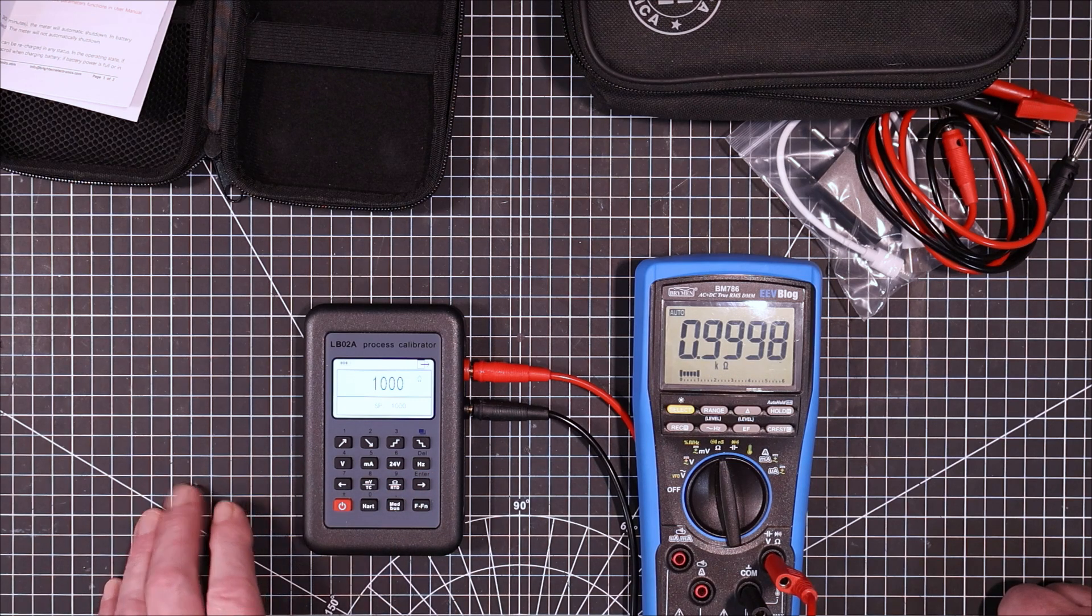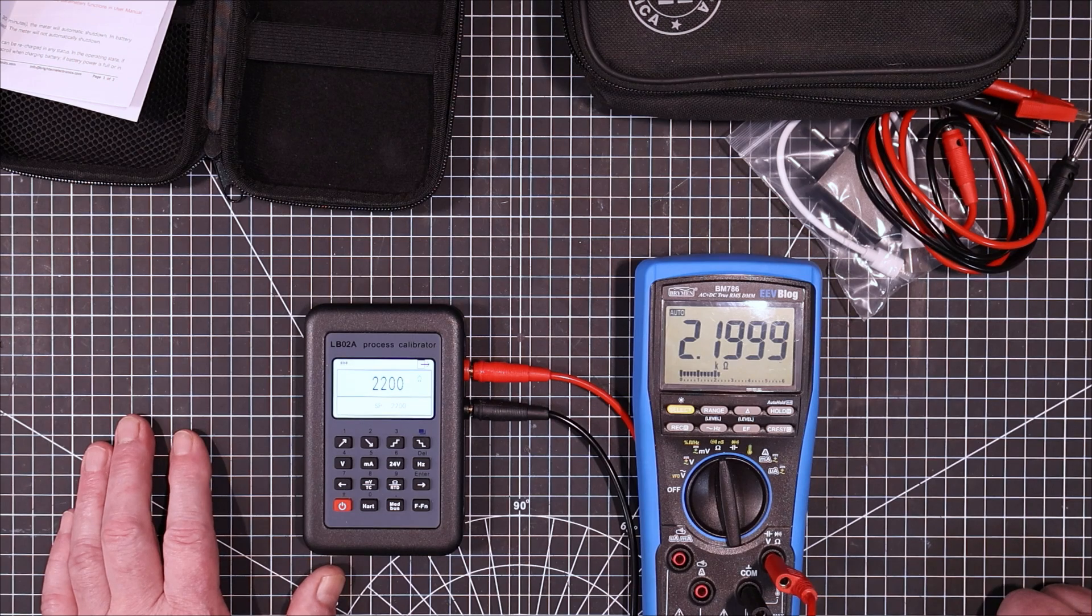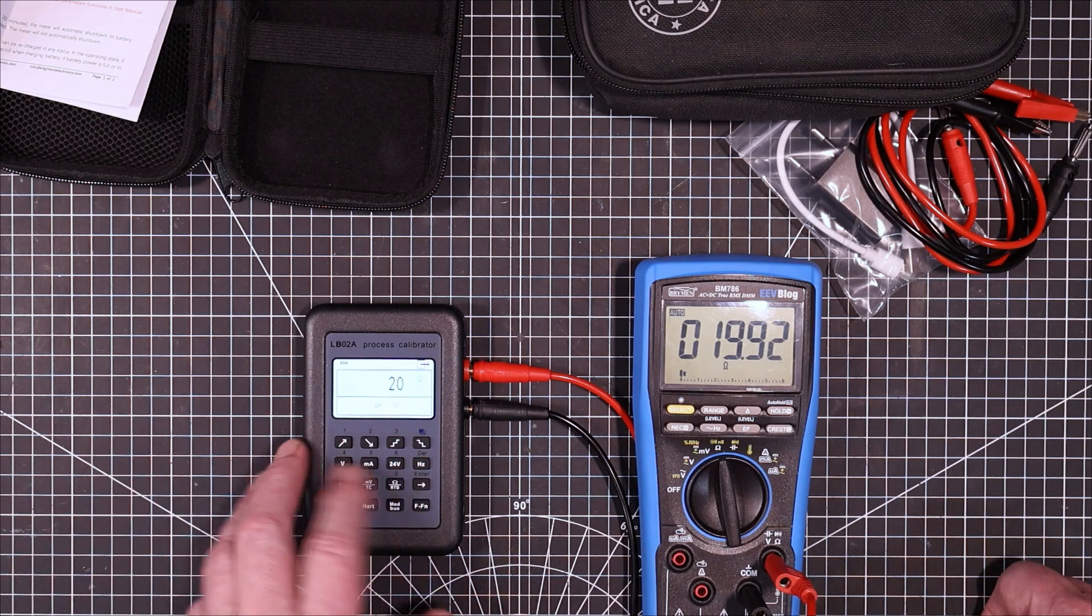We can do 100. We can do 1000. It's extremely accurate. Isn't it? High as it goes 2200 ohms. 20 is the lowest it'll do.